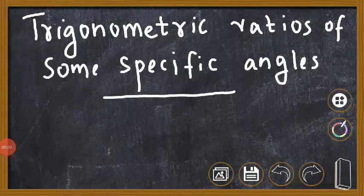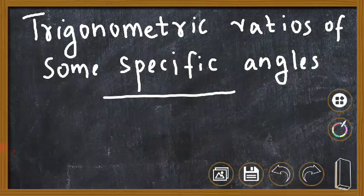Good morning to one and all. Today we are going to study trigonometric ratios of some specific angles. In the previous section we learned what are the six trigonometric ratios and the relationship between hypotenuse, opposite side, and adjacent side. The six trigonometric ratios are sin theta, cos theta, tan theta, cosec theta, sec theta, and cot theta. In this section we have to study the trigonometric ratios of some specific angles.